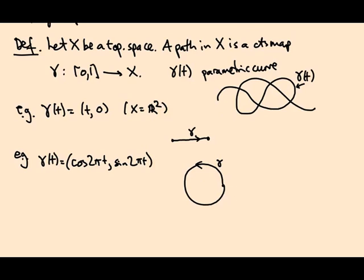The second example is a closed loop. It starts and ends at the same point. So definition: a path is called a loop if gamma(0) equals gamma(1).